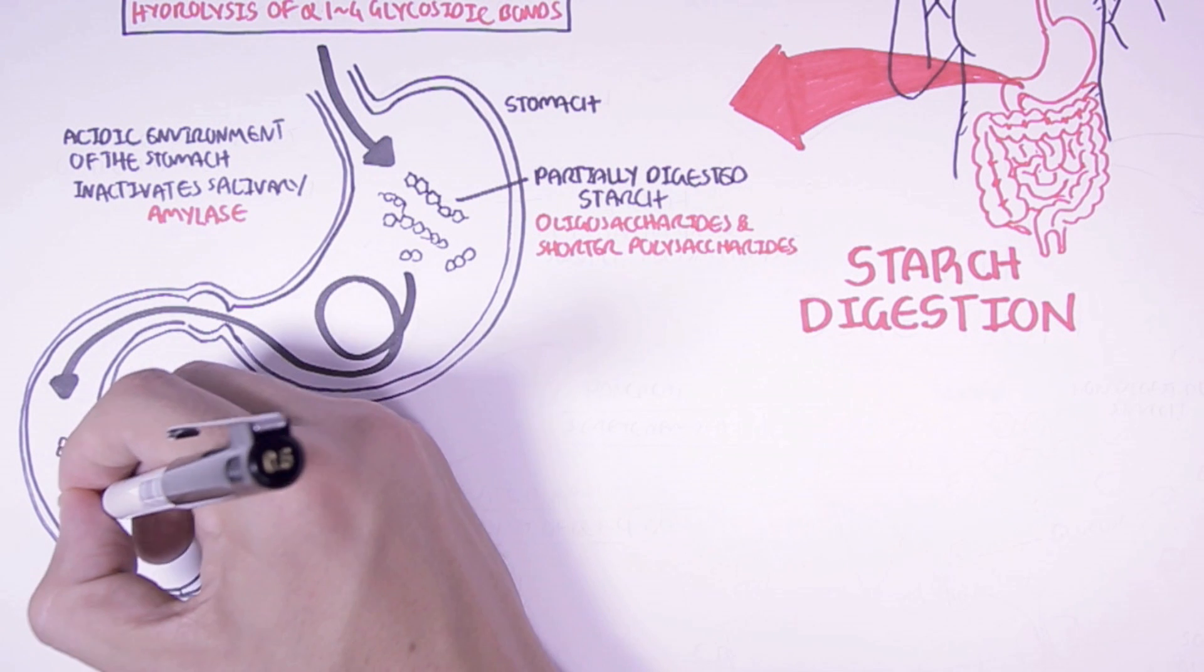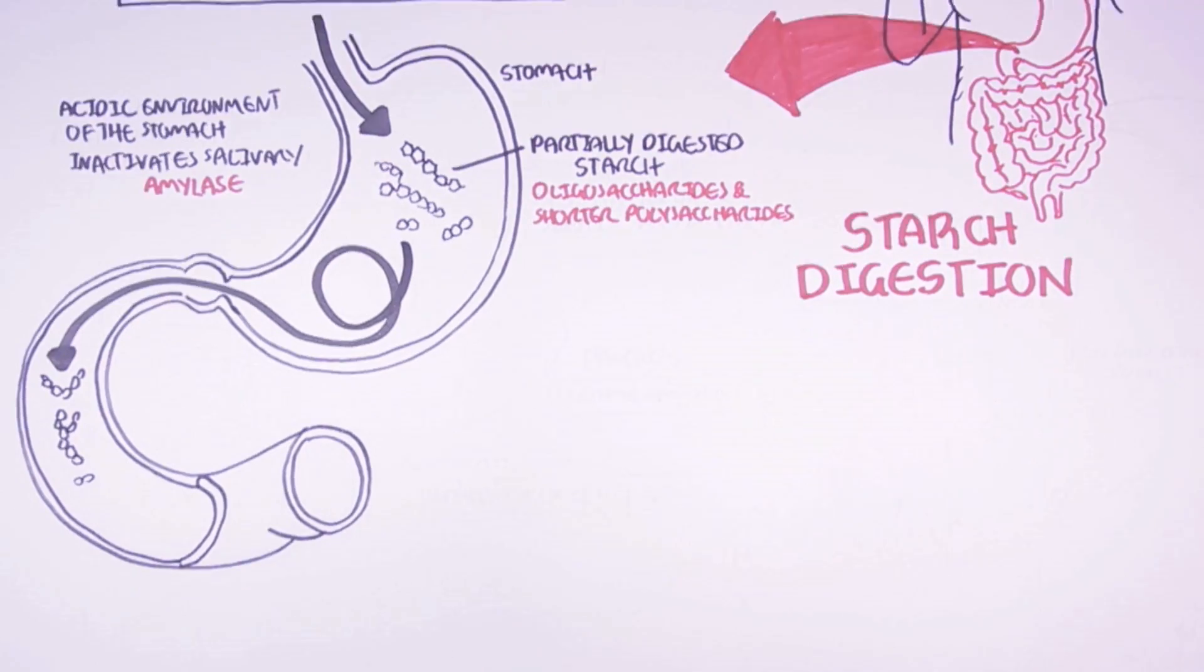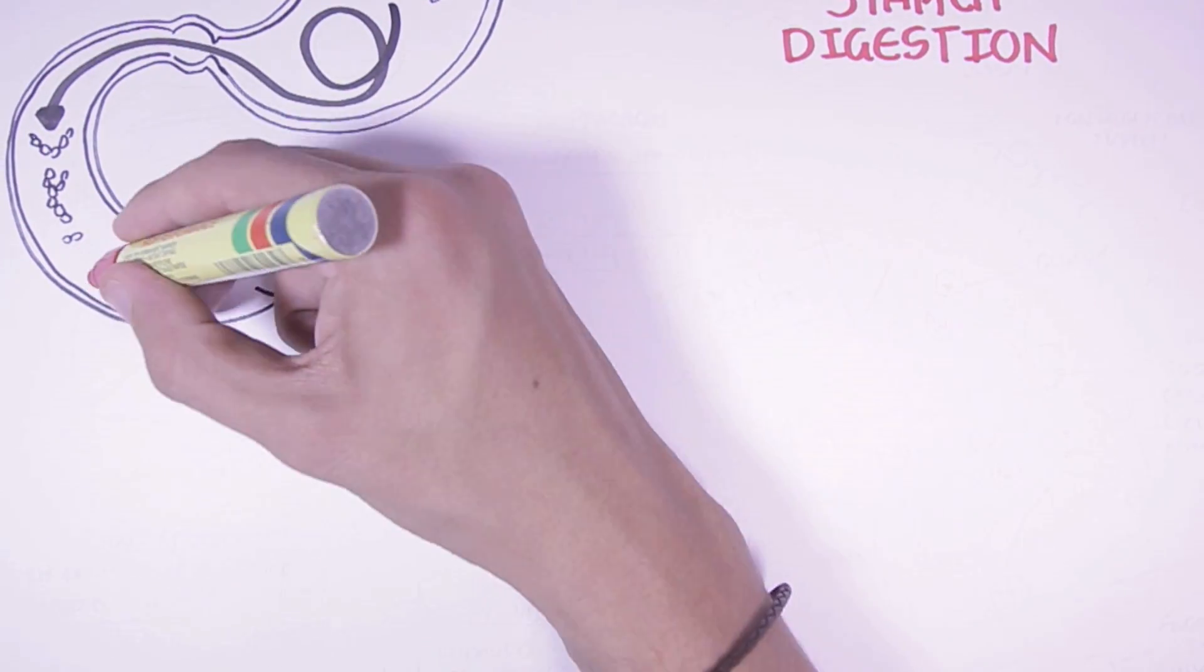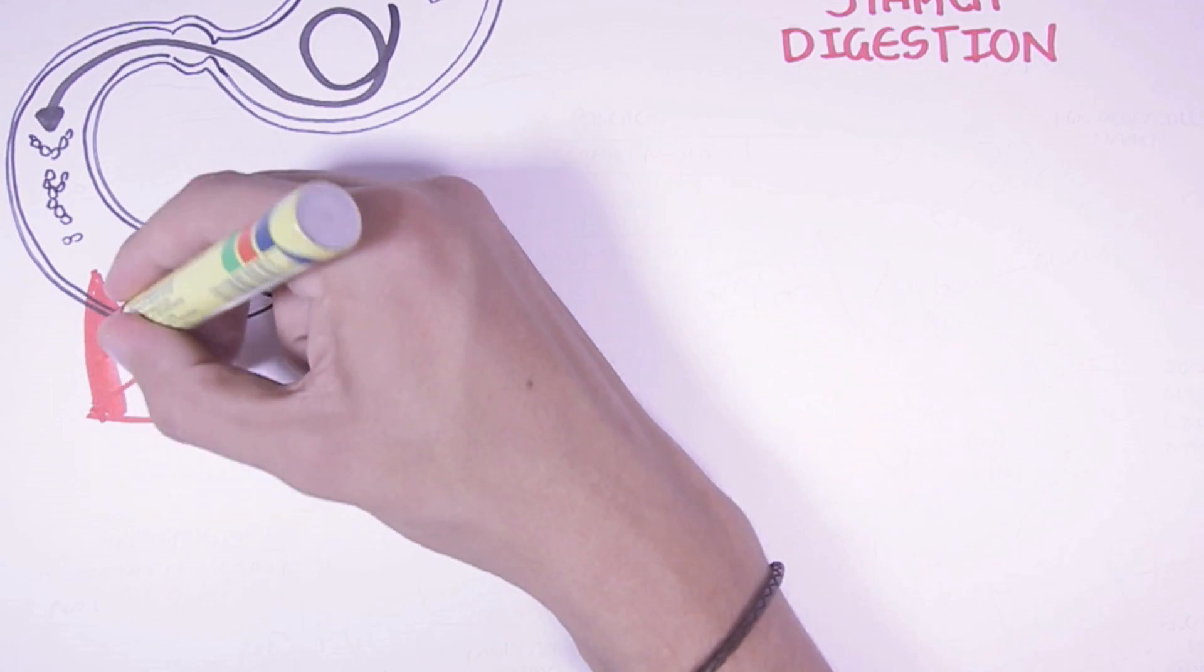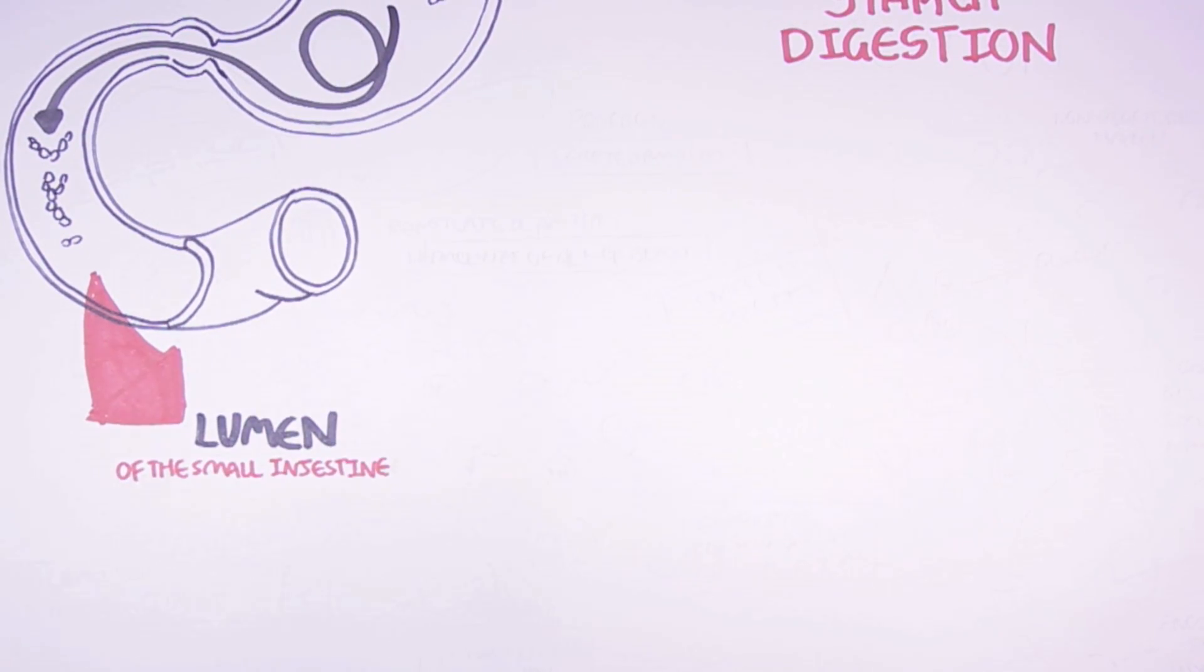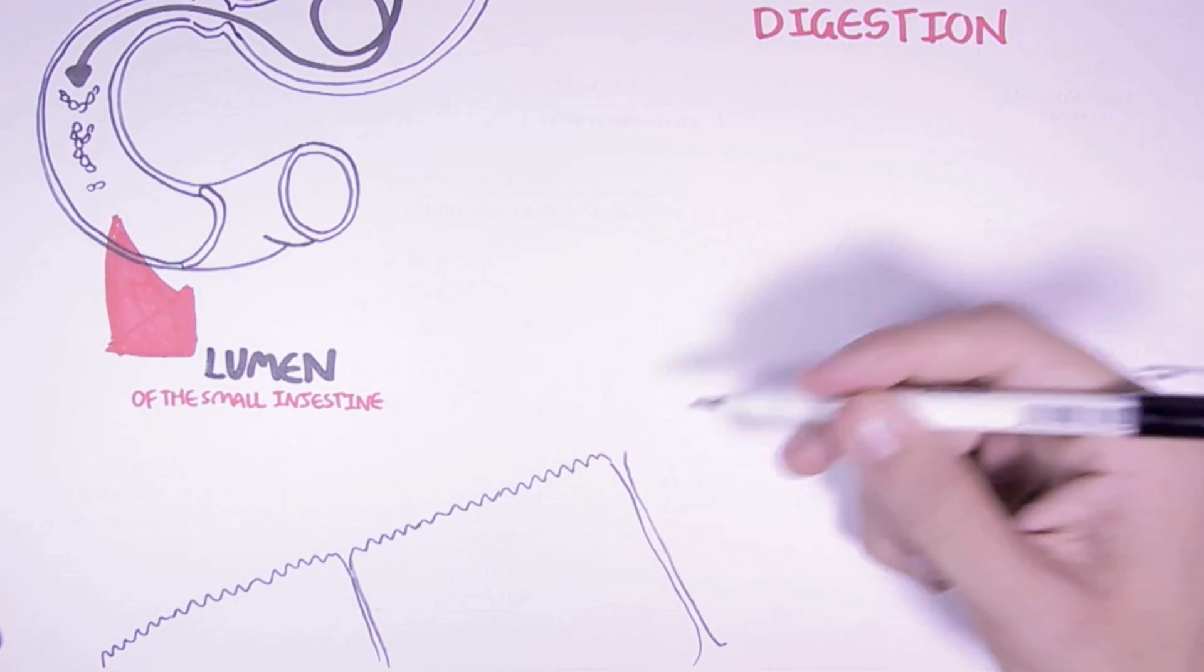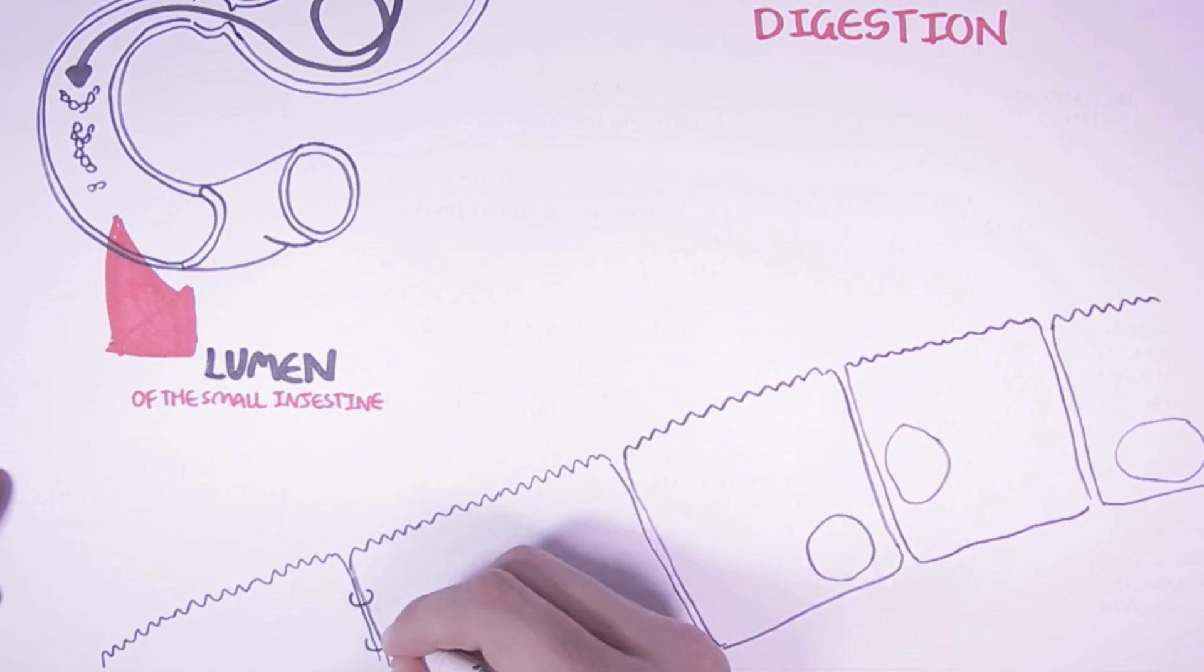And it is within the small intestine where most of the digestion and absorption of starch takes place. Now let's zoom into the small intestine and see what happens with the starch. So we are zooming into the lumen of the small intestine. Within the lumen of the small intestine we can find the cells of the intestine known as enterocytes.